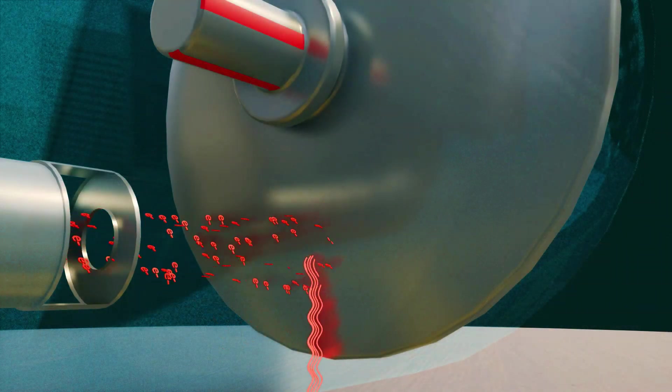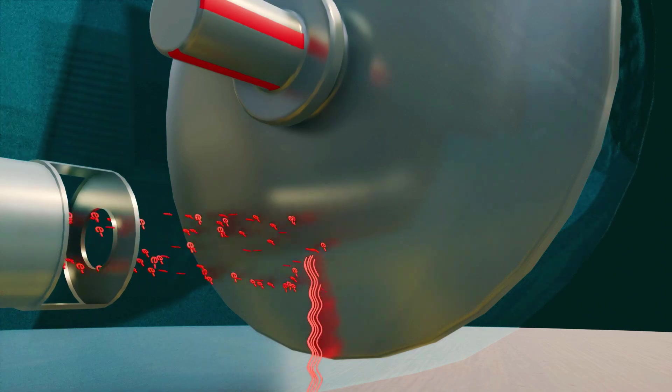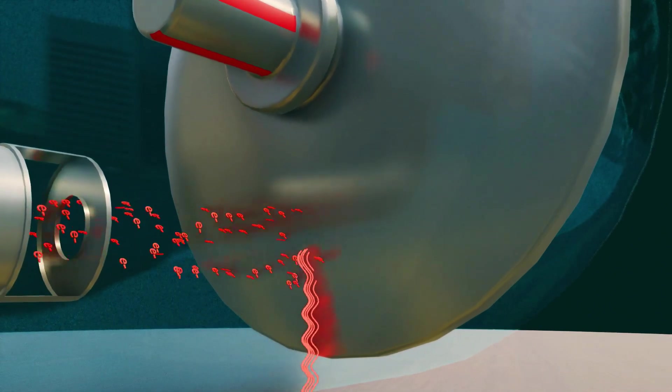The anode's primary function is to decelerate the incoming high-speed electrons to achieve this. Energy is extracted from the electrons, allowing them to slow down.